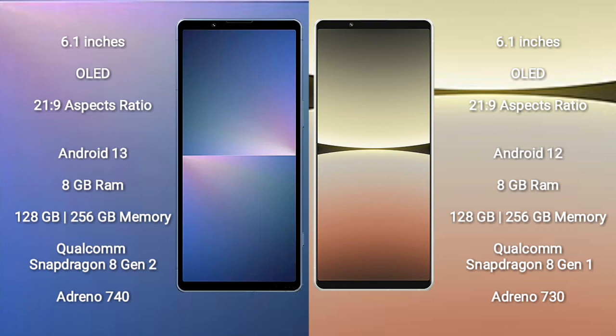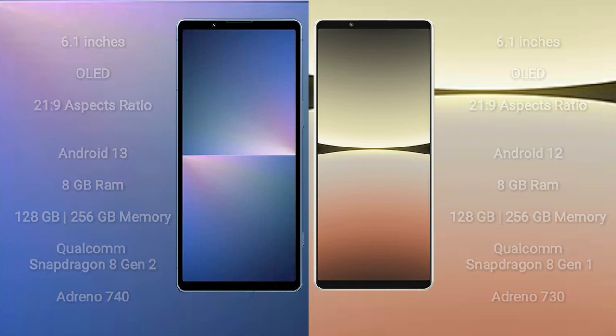Sony Xperia 5 Mark 5 comes with 8GB RAM, 128GB to 256GB internal storage, Qualcomm Snapdragon 8 Gen 2 processor, and GPU Adreno 740. Sony Xperia 5 Mark 4 comes with 8GB RAM, 128GB to 256GB internal storage, Qualcomm Snapdragon 8 Gen 1 processor, and GPU Adreno 730.